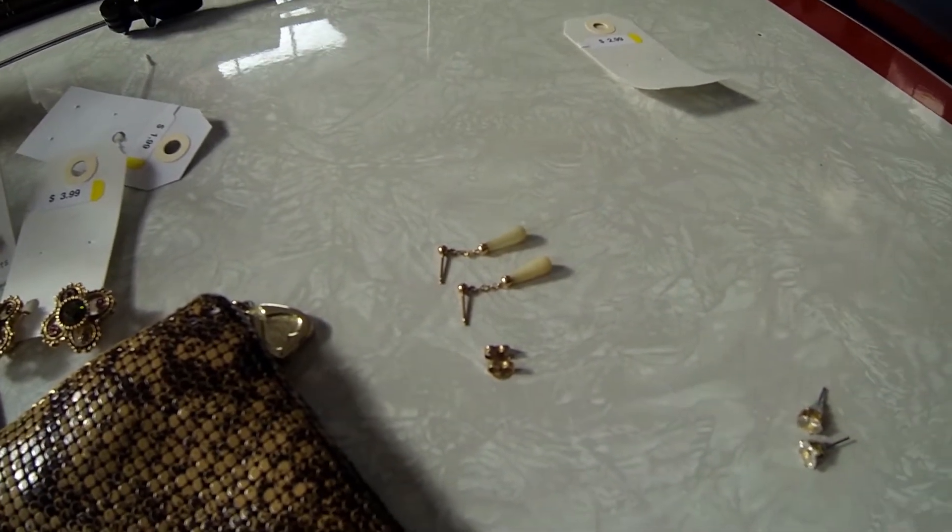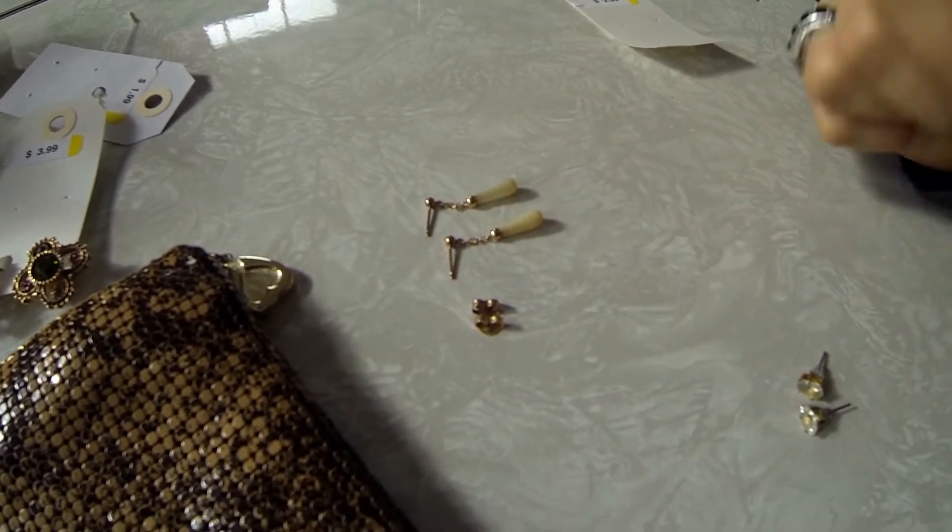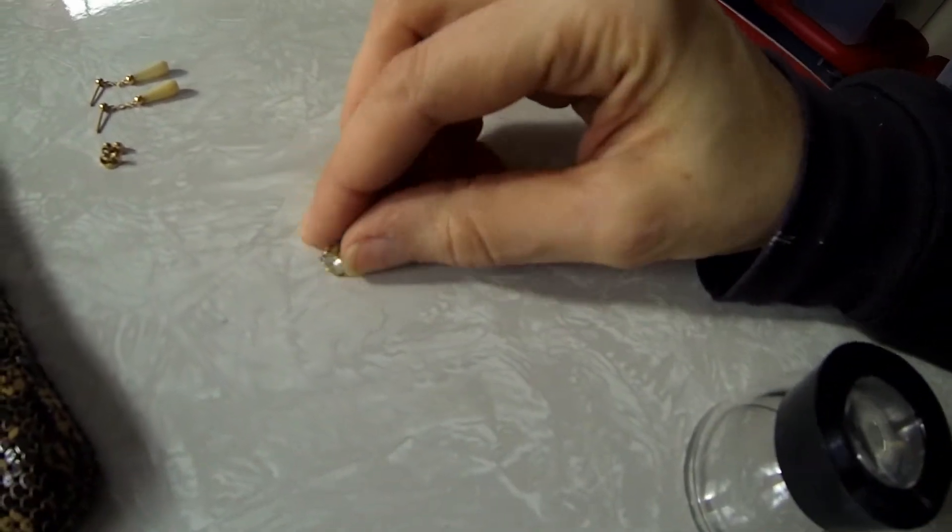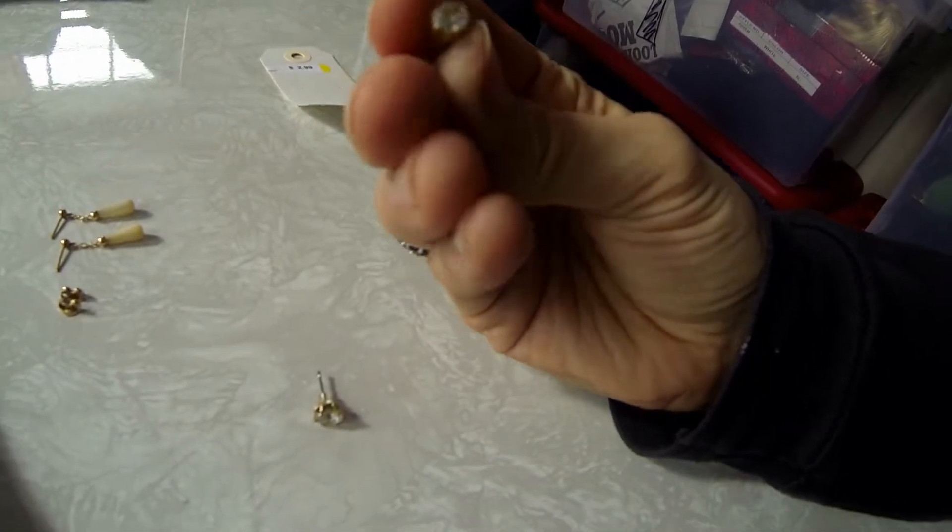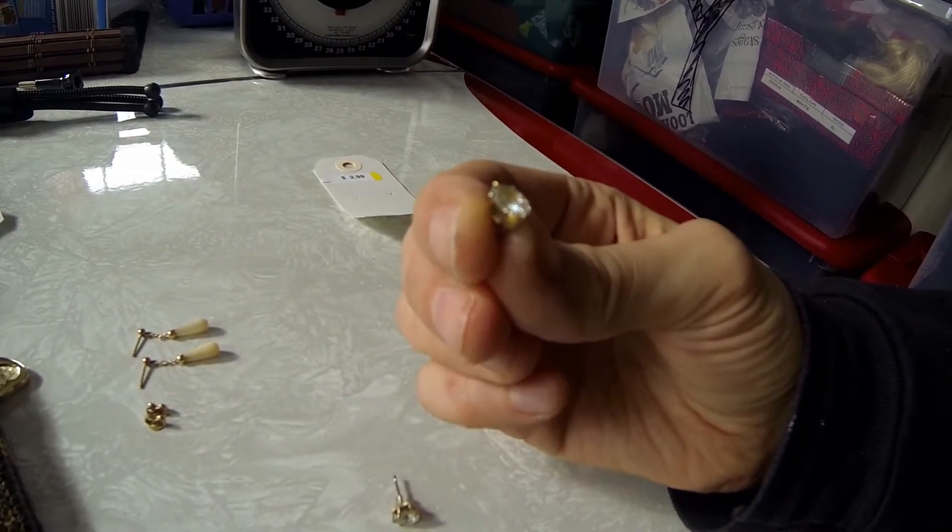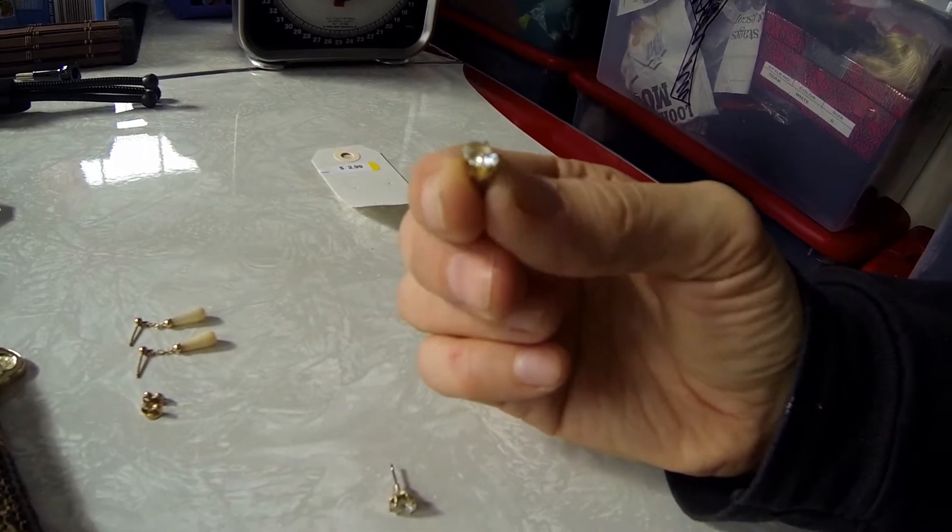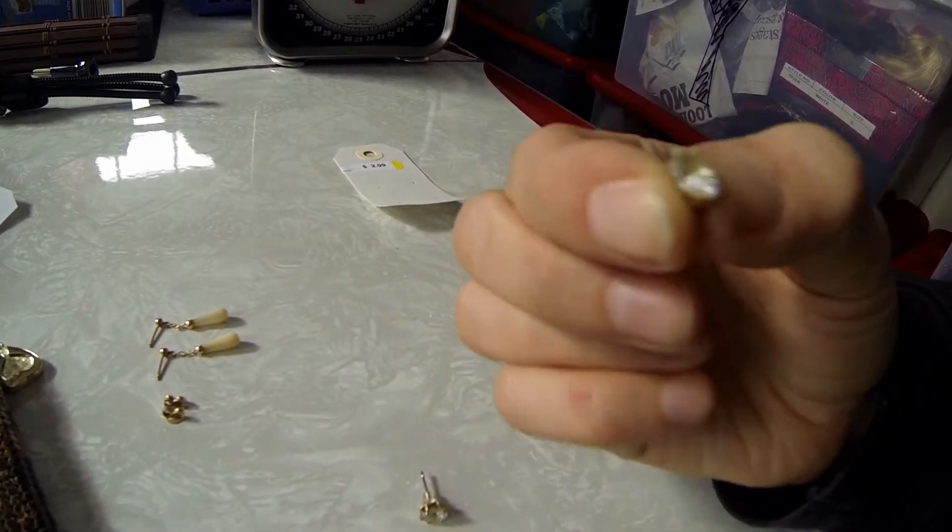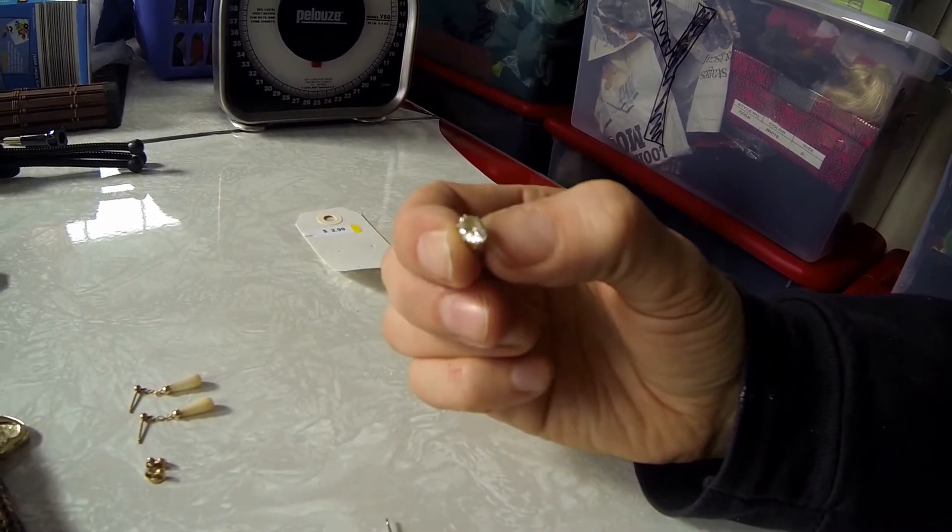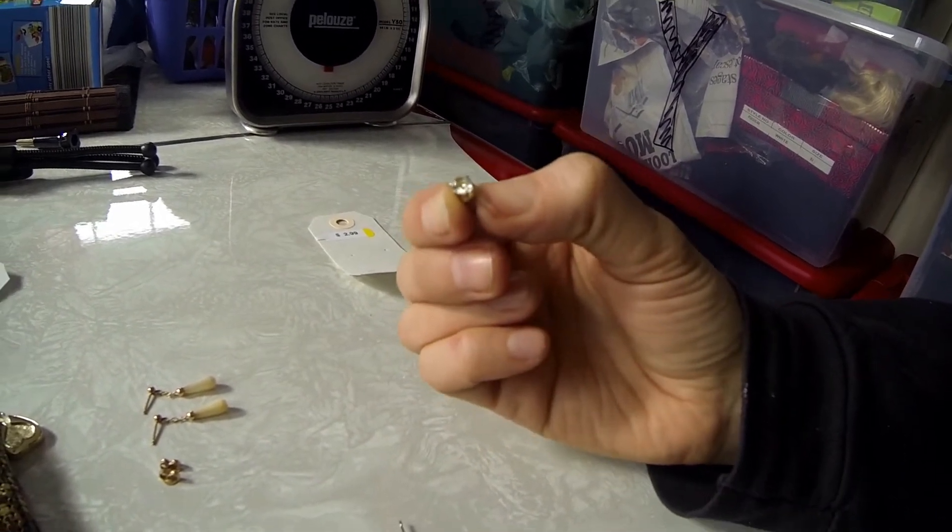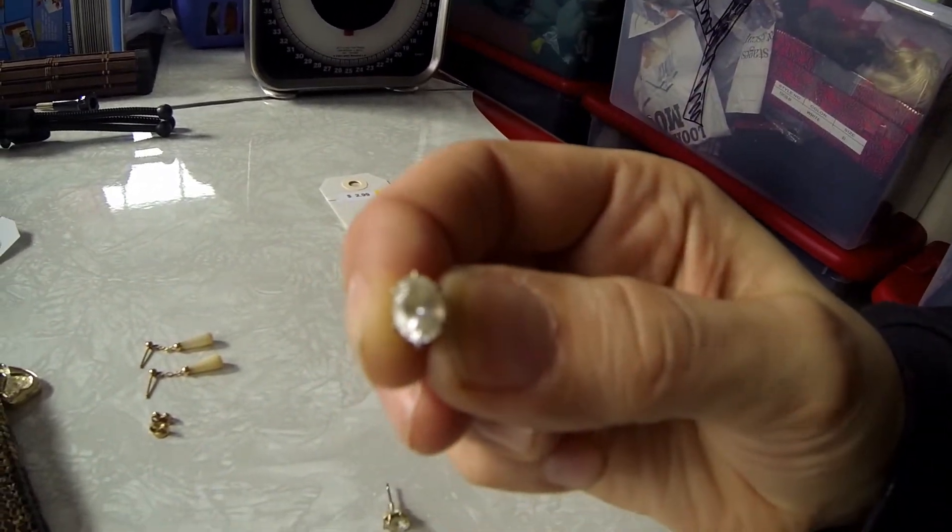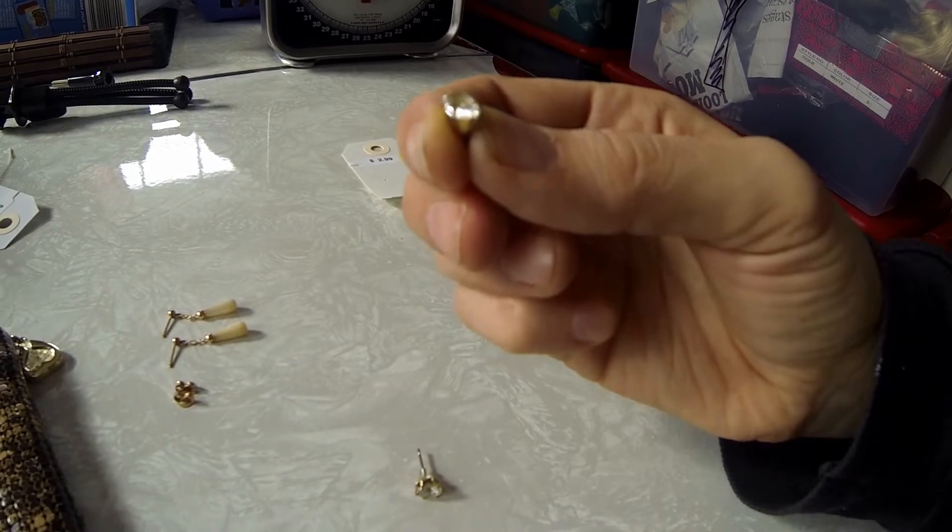But these two here, these little earrings that are rhinestone, there's no markings on them. And when I did like the fog test, where you kind of put your breath on it, they did fog up. And I guess with real diamonds, they don't fog up from what I've been told.